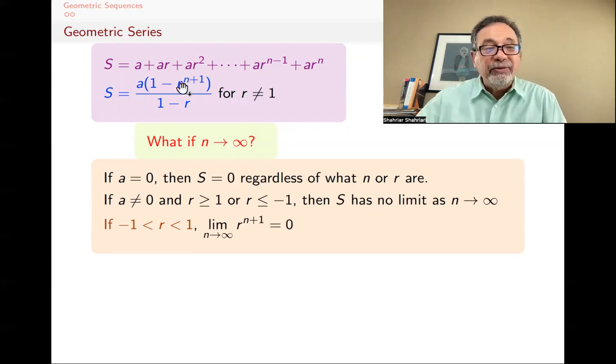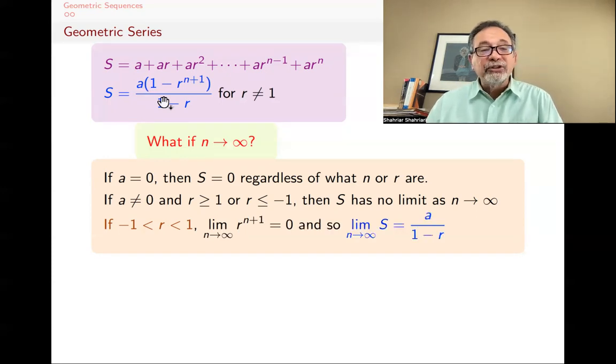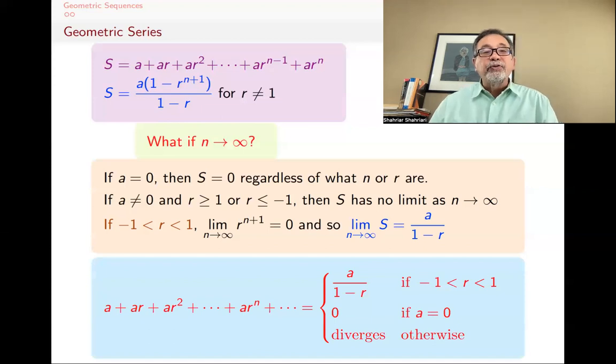And so if this thing is 0, then what's left is A/(1 - R), and so the limit of S, as n goes to infinity, is A/(1 - R). So in particular, if you have what we call the series, an infinite series, a geometric series, again, you have an initial term, and every term you multiply by a common ratio, then the answer is A/(1 - R).